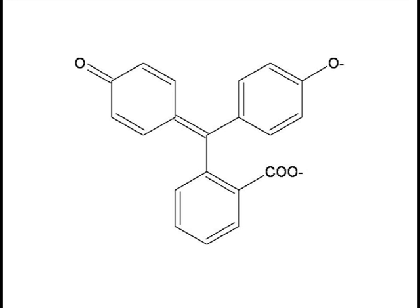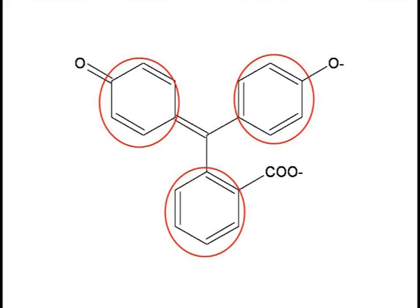we have chromophore number two of the phenolphthalein. Chromophore number two still has three benzene rings and still has the pi-electron system. But the pi-electron system of this benzene ring is connected by this sp2 carbon.